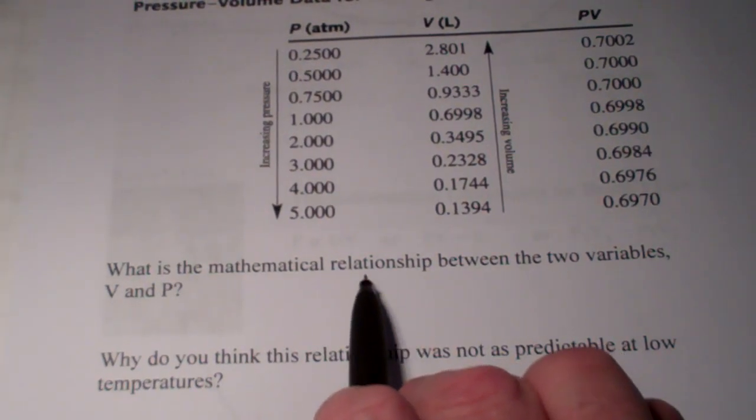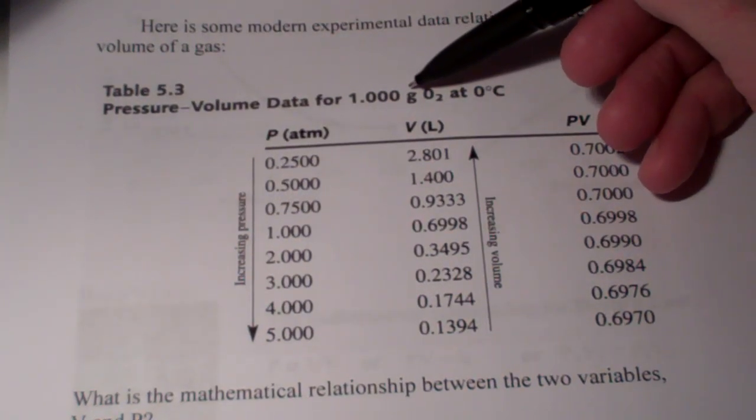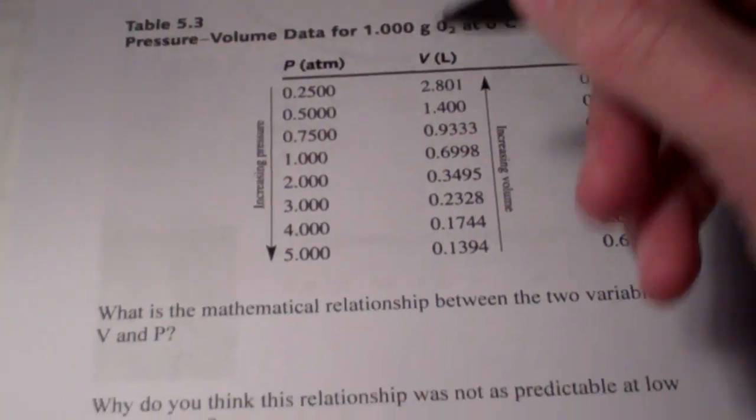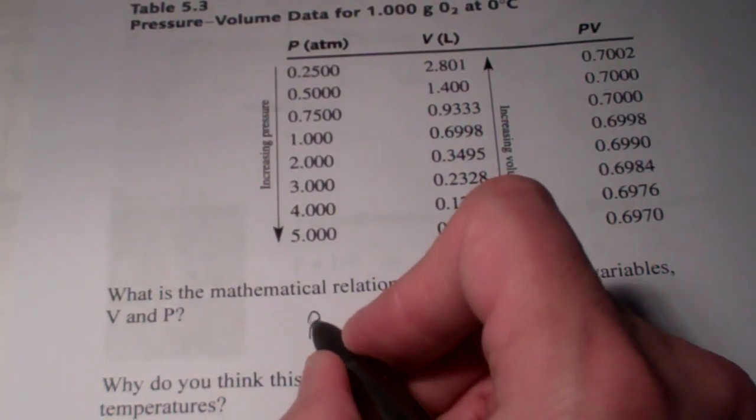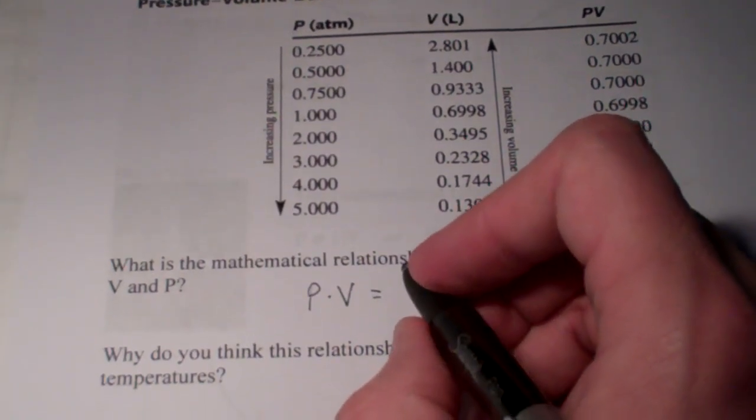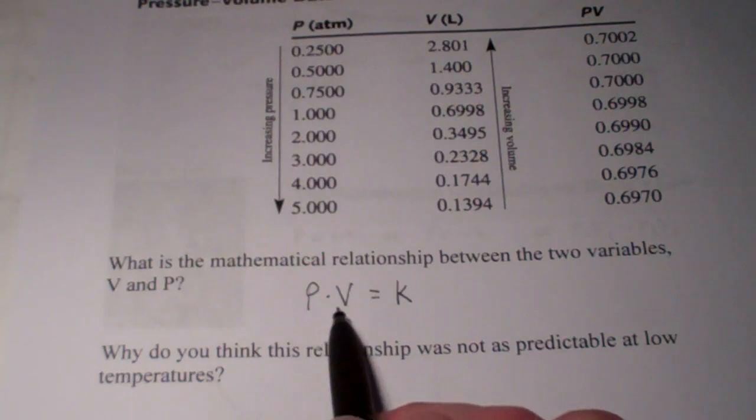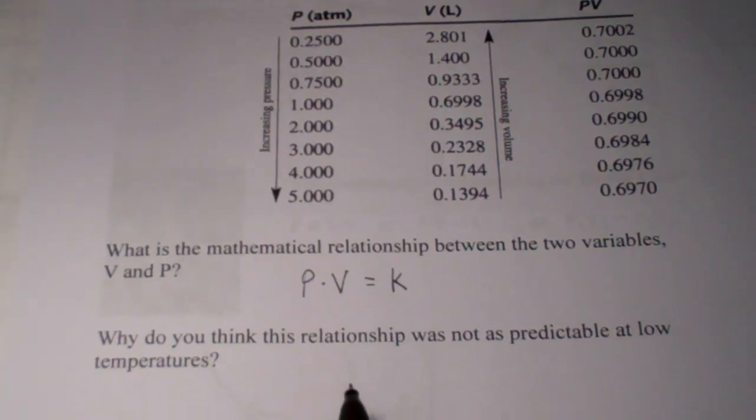So, the mathematical relationship between the two variables, V and P, so long as the amount of gas is constant and the temperature remains unchanged, is the product of pressure and volume is a constant. Now, I'm going to symbolize constant with the letter K. So, P times V equals K.